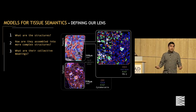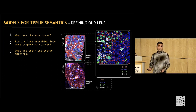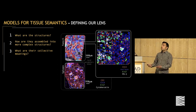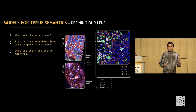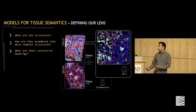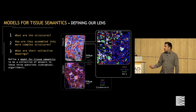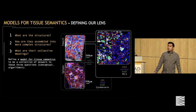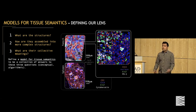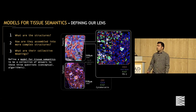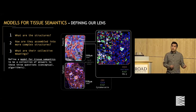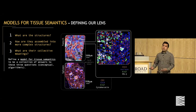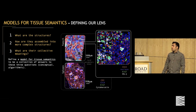These complex tissues and the structures that we see haven't just arisen randomly but have actually evolved to be the way that they are. So the third question is: what are their collective meanings? I define a model for tissue semantics to be a collection of answers to these three questions — both conceptual and biological answers, as well as algorithmic answers, because we're going to be working with data at the end of the day.